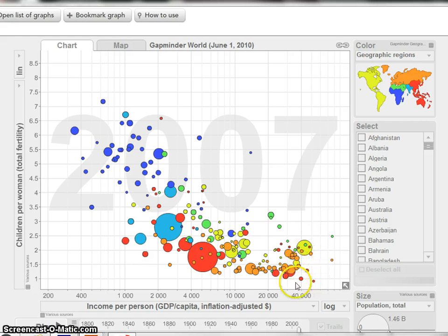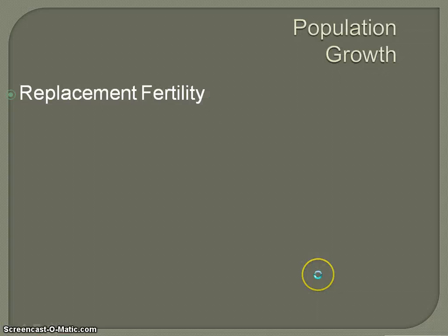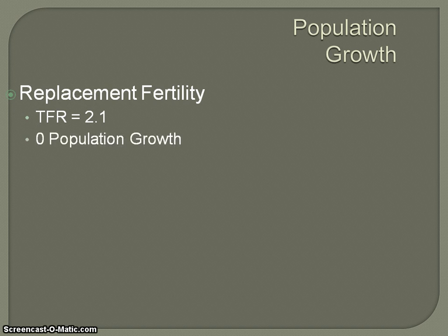On the other side, down in the bottom right-hand corner, this isn't necessarily positive either, because when we get to a number that's too low, we see a shrinking economy. That's when we talk about replacement fertility — when you get a total fertility rate of 2.1 — and basically we're looking at zero population growth, meaning the population is going to stay steady. This is the place where most developed countries would like to be.